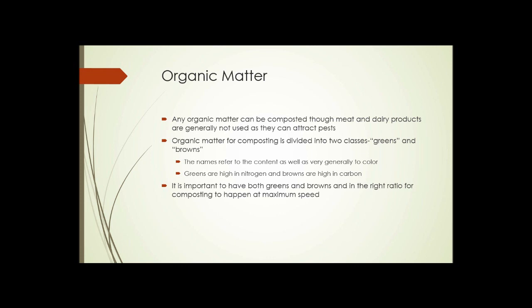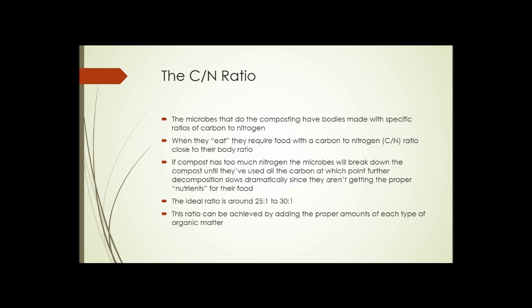And it's important to have both greens and browns in the right ratio to get composting to happen at maximum speed. Why is that? It's because of something called the C/N or carbon-nitrogen ratio. The microbes that do the composting have bodies made with specific ratios of carbon to nitrogen.